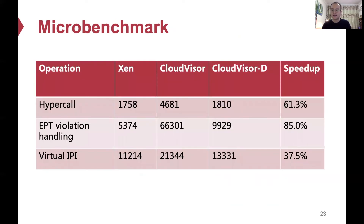We have implemented CloudVisor-D and evaluated its performance using microbenchmarks and real-world applications. First, we evaluated the performance of CloudVisor-D on three basic virtual machine operations. To measure hypercall performance, we called a dual-VCPU-OP hypercall to check whether a VCPU is running or not. CloudVisor-D achieves 61% speedup compared with CloudVisor due to efficient EPTP switching in non-root mode. For EPT handling, eviction handling, and virtual IPI, CloudVisor-D achieves 85% and 37% speedups respectively.